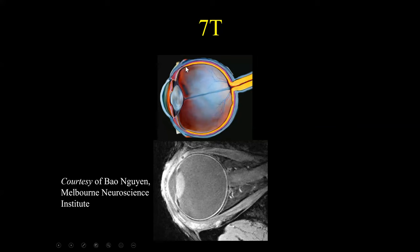Deep to the uveal tract is the retina. When we look at the light coming in, it passes through the cornea, goes through the anterior chamber, gets refocused on the lens, and the lens focuses it on the retina. Below the retina is the choroid, and eventually the signal is transmitted from the retina all the way back into the optic nerve.